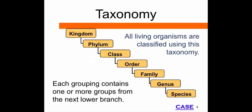The hierarchical system used in classification is based on similarities of organisms. The seven levels of classification include kingdom, phylum or division, class, order, family, genus, and species. One mnemonic device you can use to help you remember the order is: King Philip Came Over From Great Spain.